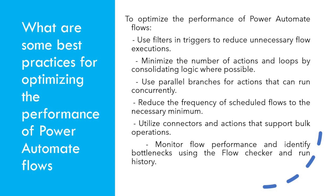What are some best practices for optimizing the performance of Power Automate flows? One, use filters in triggers to reduce unnecessary flow executions. Three, minimize the number of actions and loops by consolidating logic where possible. Four, use parallel branches for actions that can run concurrently. Five, reduce the frequency of scheduled flows to the necessary minimum. Six, utilize connectors and actions that support bulk operations.